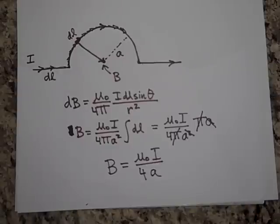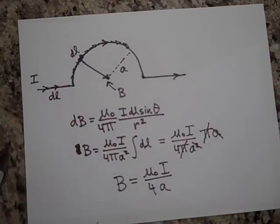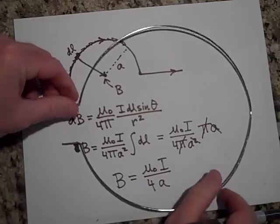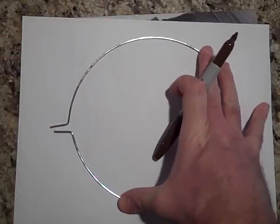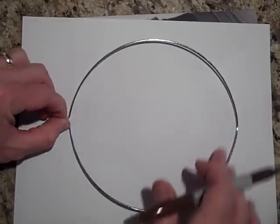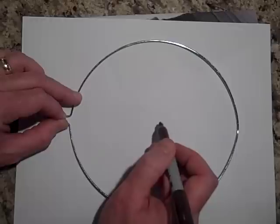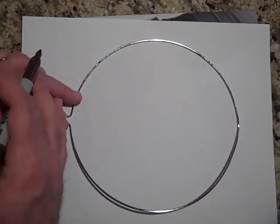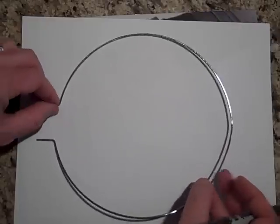There are other things you can do to make a difficult problem much easier. For instance, what if instead of a semi-circle it's a full circle? Here are two wires coming in, it circles all the way around, then goes out. DL is always at a right angle to R, so it's the same as before — except when you sum up all the DLs you get the full circumference, 2πa, instead of πa. That's the only difference. Thanks, bye.